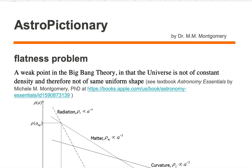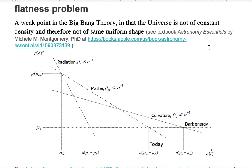The flatness problem is a weak point in the Big Bang Theory, in that the universe is not of constant density and therefore not of the same uniform shape. Let's take a look at this flatness problem.